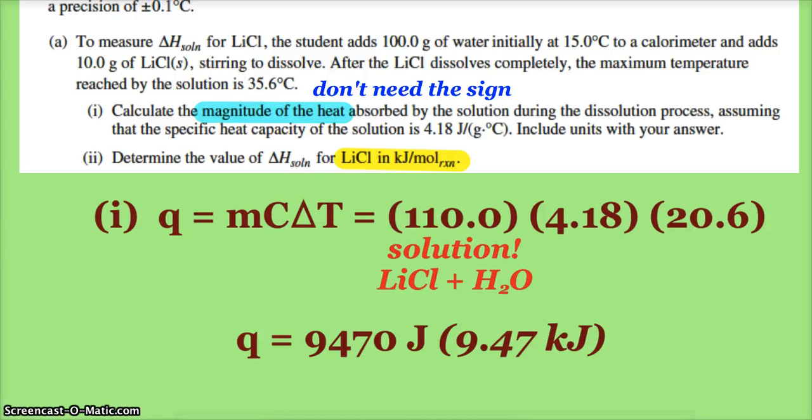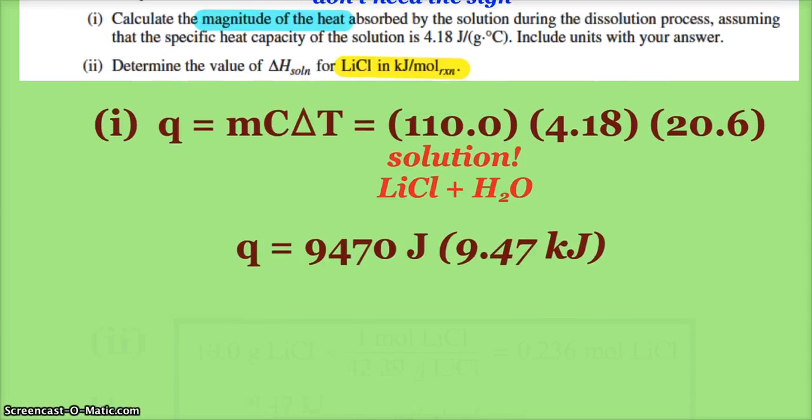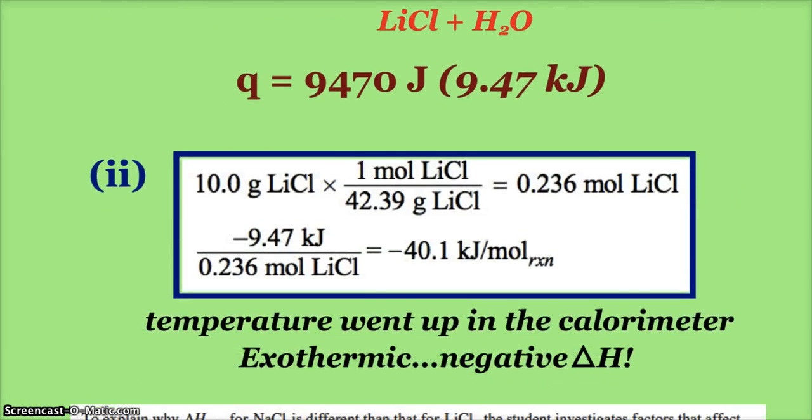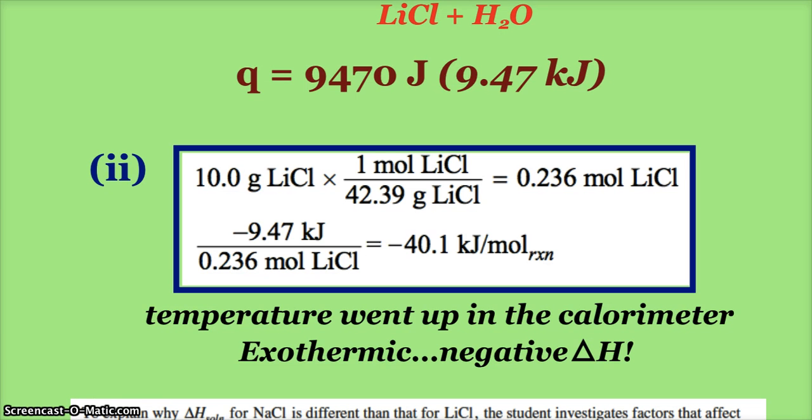Now part two: determine the value of the delta H of solution for lithium chloride in kilojoules per mole. So now I just have to take my 9.47 kilojoules and divide by moles of lithium chloride. I have 10 grams, so just turn that to moles. Also though, for my delta H, I'm going to want to include the negative sign now to show that it's exothermic. Lithium chloride is 42.4 grams per mole, so I have 0.236 moles of lithium chloride. So it's negative 40.1 kilojoules per mole.